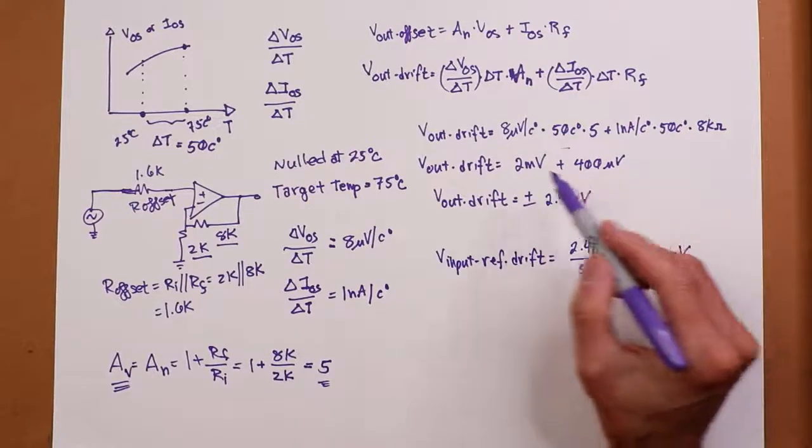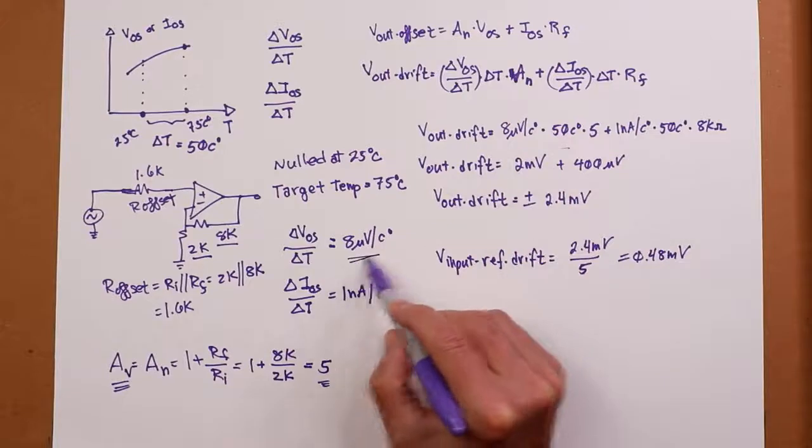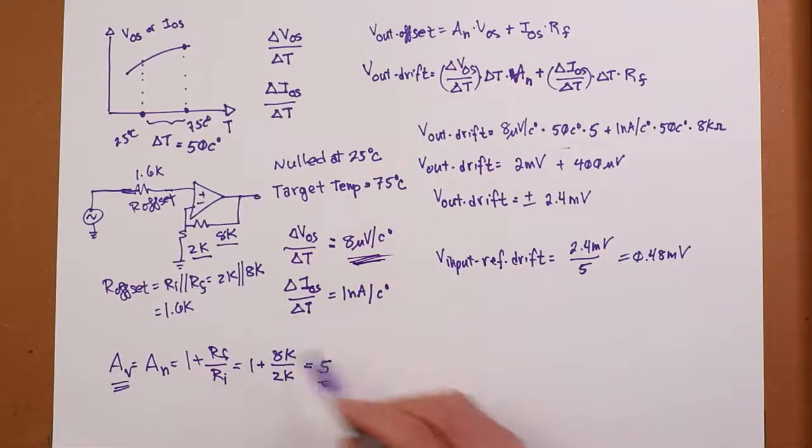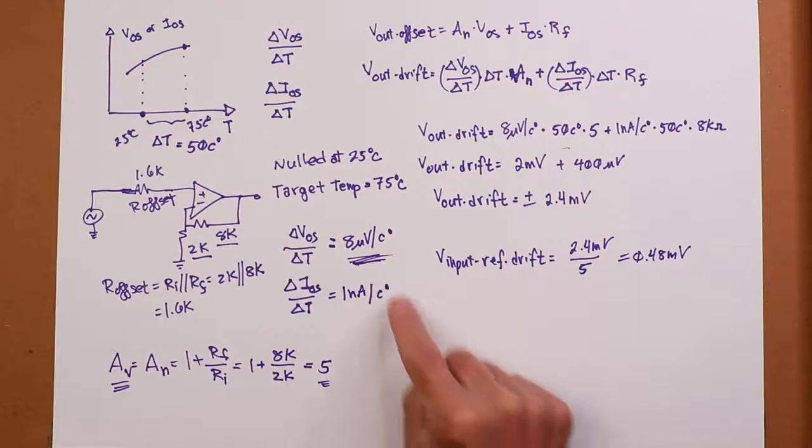You know if you were going to look around for a new device, look for one that has a better delta V_OS delta T. In this particular circuit, that's really important. Now some BIFET op-amps, the delta I_OS delta T is so small because they have a JFET front end over here, FET front end. So the currents are really tiny. They won't even list this because it'll be like a fraction of a picoamp per centigrade degree. And it's so small that for any practical circuit, you just don't even worry about it.